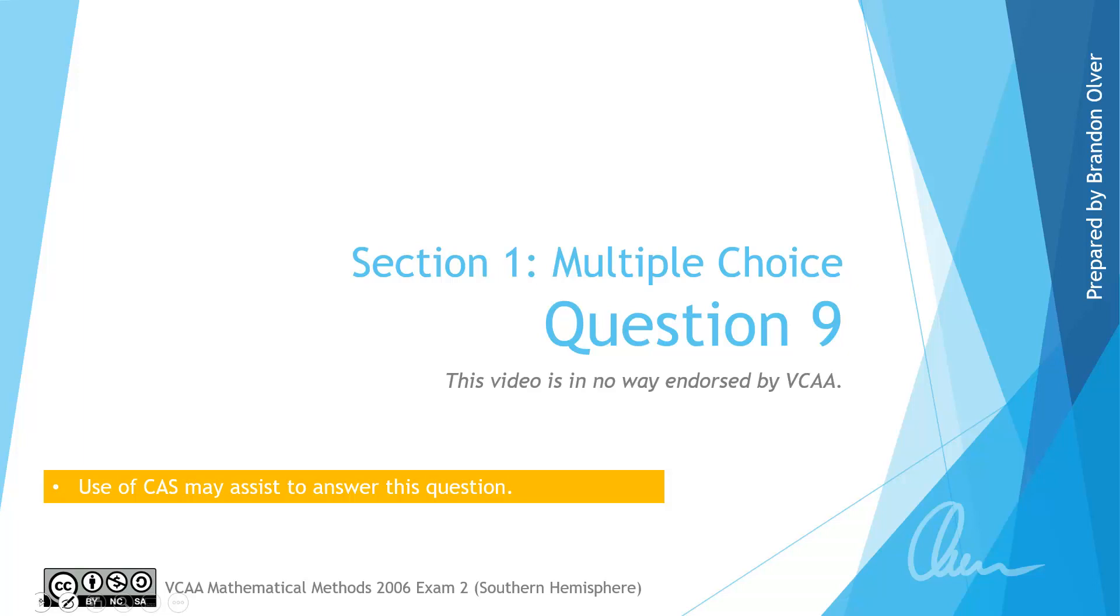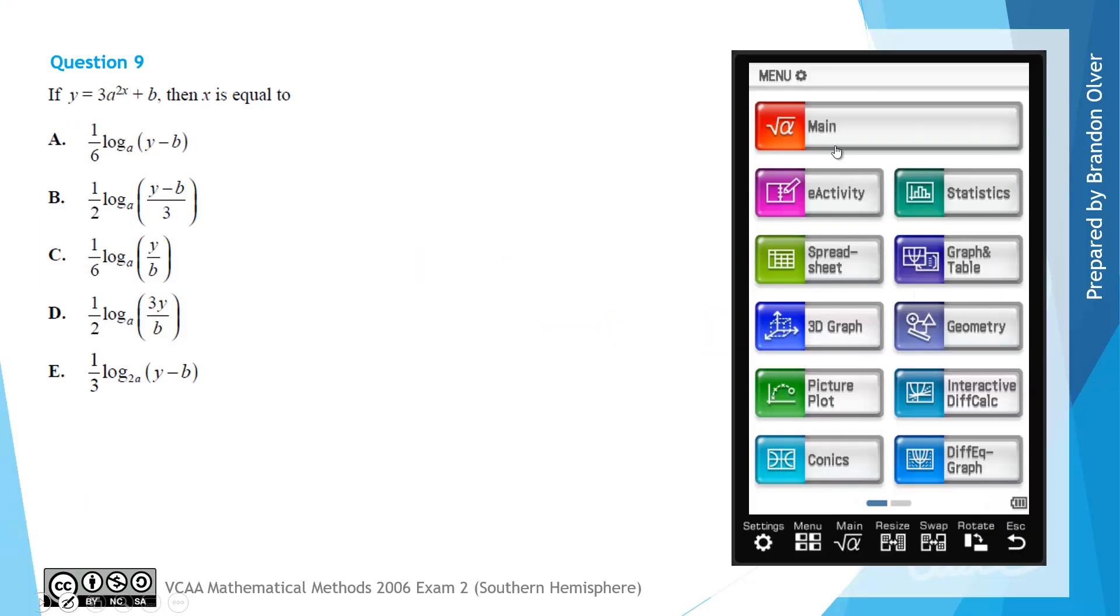So for question 9 we have if y equals 3 times a to the power of 2x plus b, then x is equal to one of the following options. So what we really want to do is transpose that equation to get x by itself.